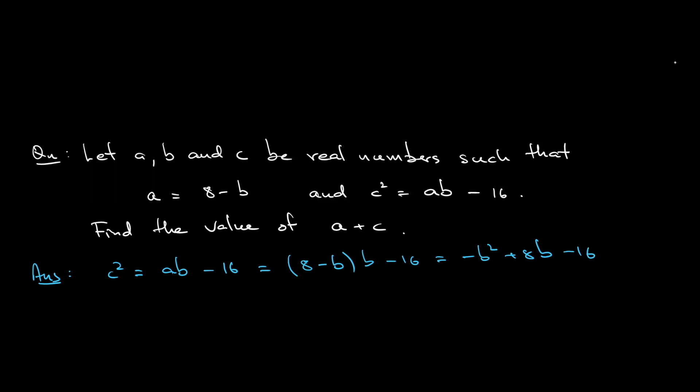Something should come to your mind here. Let me write down, c square equals negative b square plus 8b minus 16. If you take negative as a factor, this will leave you b square minus 8b plus 16. In fact, this can be written as something square. This equation should be b minus 4 square.